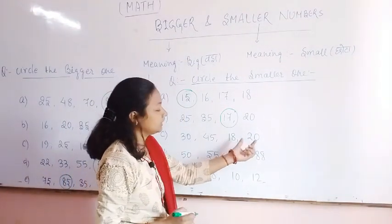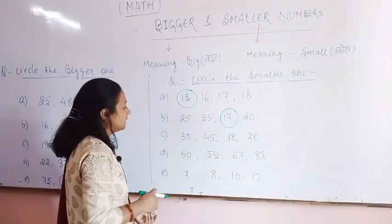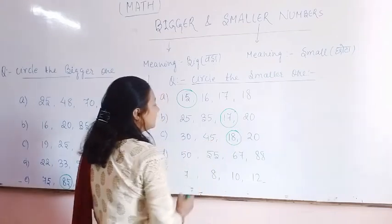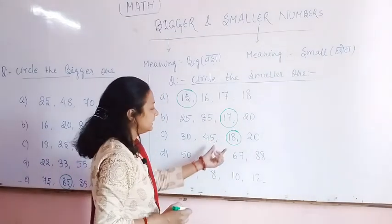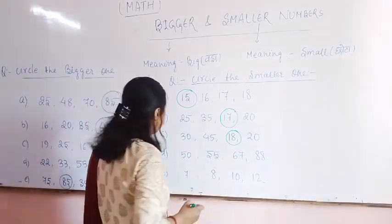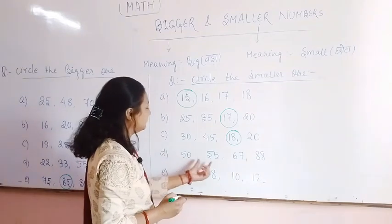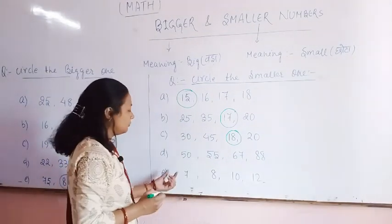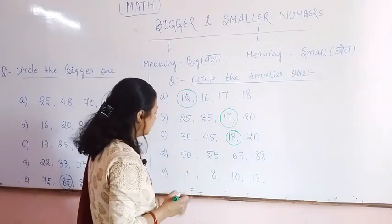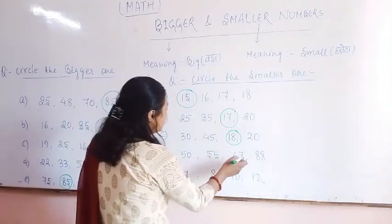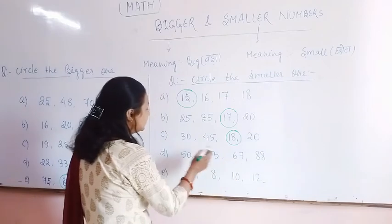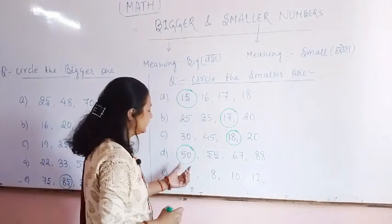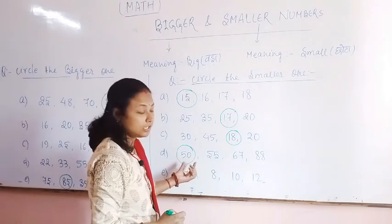Which one is the smaller one? The numbers are 50, 55, 67, and 88. Which one is the smaller one? In this group, 50 is the smaller one.